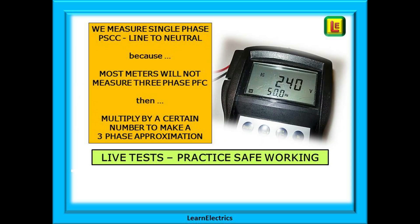Why do we measure single phase first? A line to neutral measurement of the prospective short circuit current, or PSCC, is made because most multi-function testers will not measure three-phase fault currents. So we measure at 230 volts and then multiply by certain numbers to arrive at the 400 volt three-phase answer. Remember that these are live tests and suitable precautions must be taken and safe working practiced.